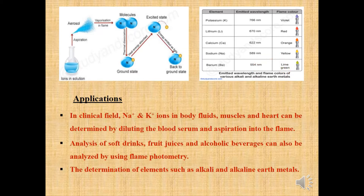Applications of flame photometry: It is used in the clinical field — sodium and potassium ions in body fluids, muscles, and heart can be determined by diluting the blood serum and aspirating it into the flame. It is also used in the analysis of soft drinks, fruit juices, and alcoholic beverages. Another important application is the determination of elements such as alkali and alkaline earth metals.